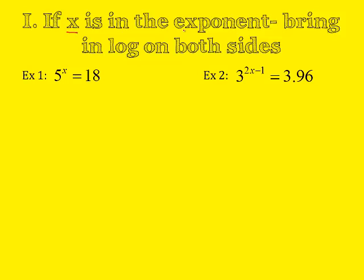If x is in the exponent, bring in the logarithm on both sides of the equations, because remember the power rule will move that to the front. So if I do this, I have to take the logarithm of both sides. So logarithm of 5 to the x equals logarithm of 18. And then remember the power rule will move that x to the front. So I have x times the log of 5 equals the log of 18.